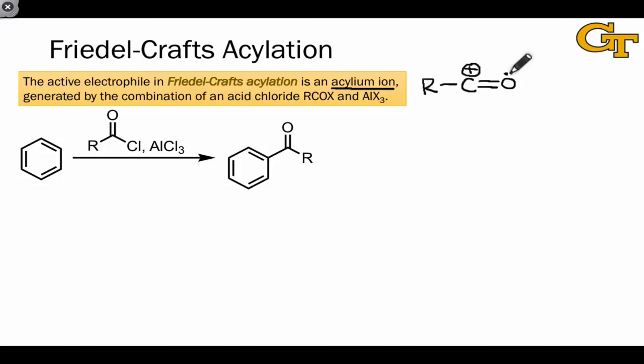We can draw a resonance structure of this ion by pushing the lone pair on oxygen into a new bond between carbon and oxygen that shows that the positive charge is delocalized over both carbon and oxygen. This resonance stabilization turns out to be key.